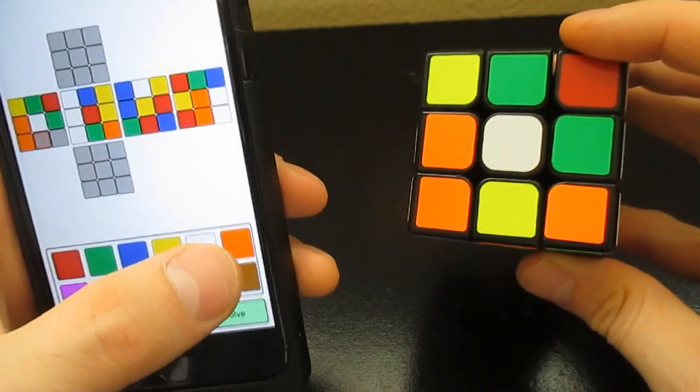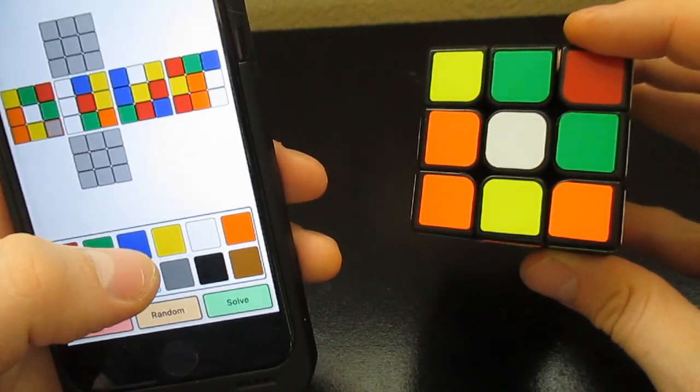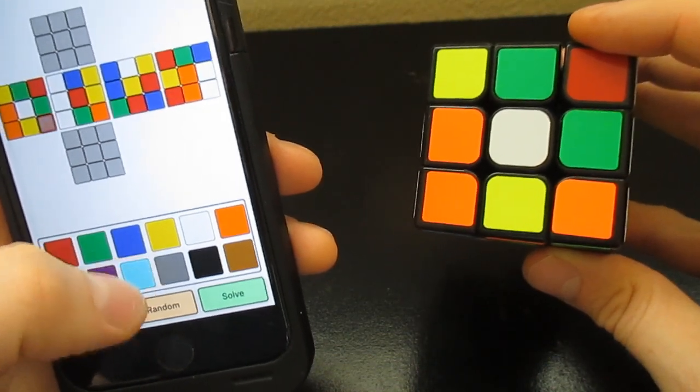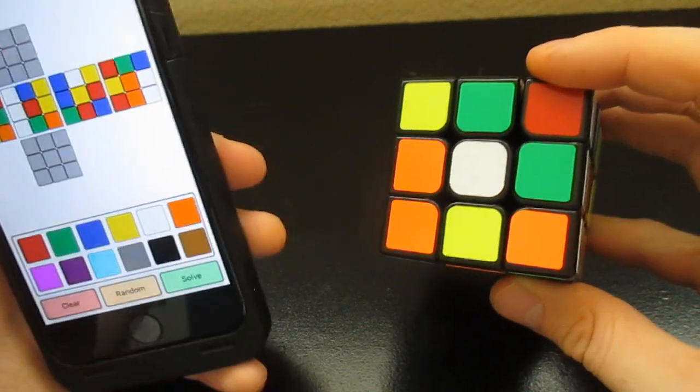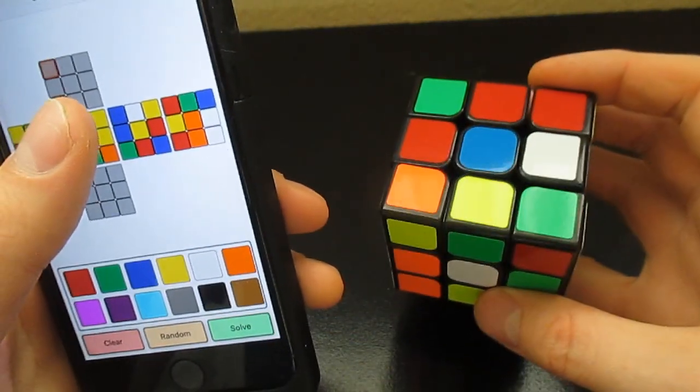This is another side, so here it is. I just turned it to the other side. So yellow, green, red, orange, white, green, green, orange, yellow, yellow, orange.